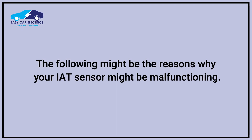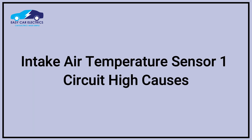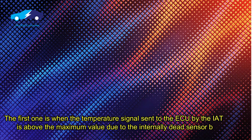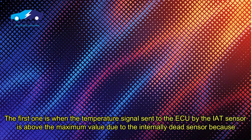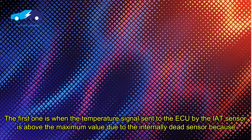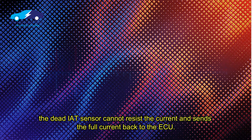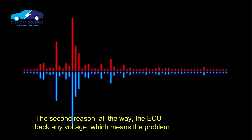The following might be the reasons why your Intake Air Temperature Sensor might malfunction. Let's see the causes of Intake Air Temperature Sensor 1 Circuit High. This condition shows up for two reasons. The first is when the temperature signal sent to the ECU by the IAT sensor is above the maximum value due to an internally dead sensor, because the dead Intake Air Temperature Sensor cannot resist the current and sends the full current back to the ECU.